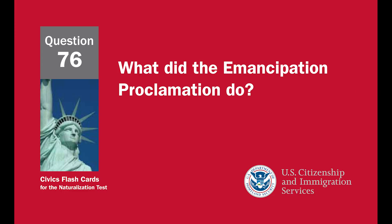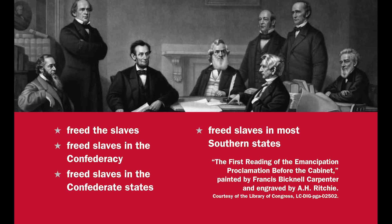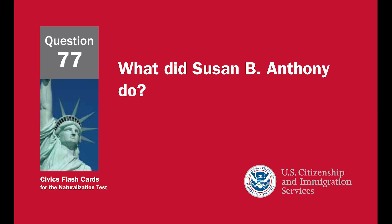What did the Emancipation Proclamation do? Freed the slaves. Freed slaves in the Confederacy. Freed slaves in the Confederate States. Freed slaves in most Southern states. What did Susan B. Anthony do? Fought for women's rights. Fought for civil rights.